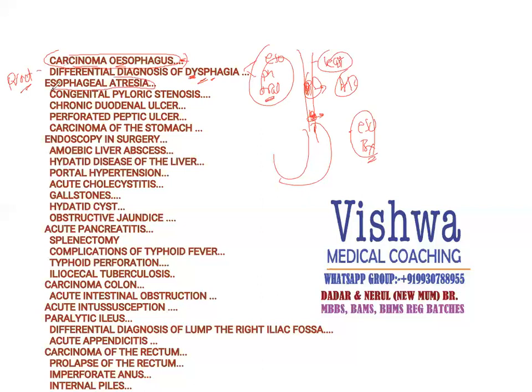Esophageal atresia is a congenital condition in which the esophagus is absent. You are required to feed the baby from a gastrostomy, or we also go for parenteral feeding.